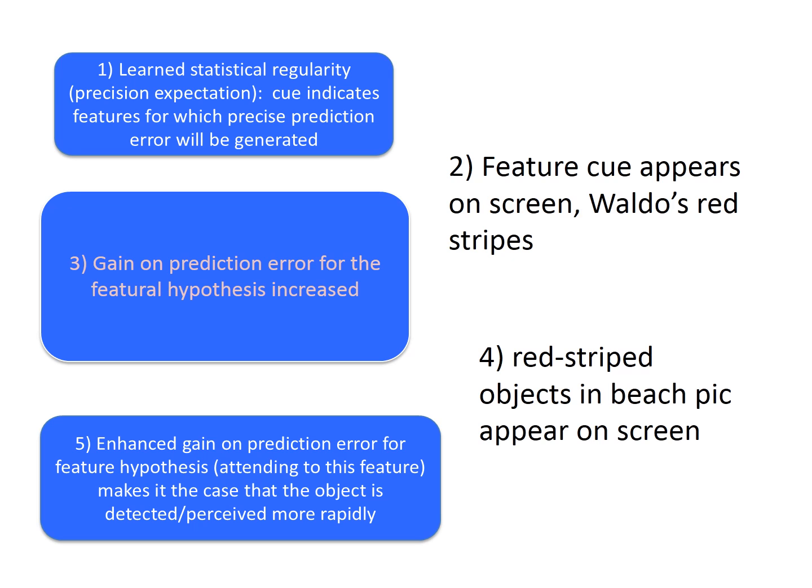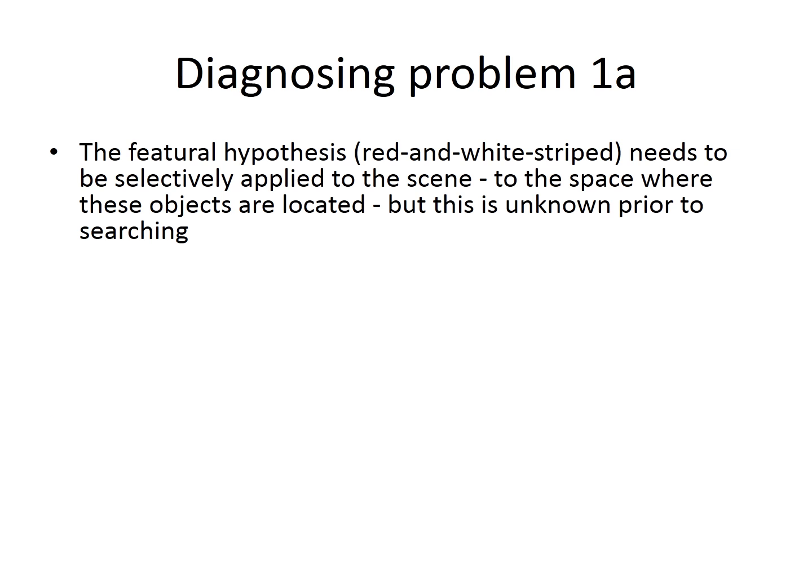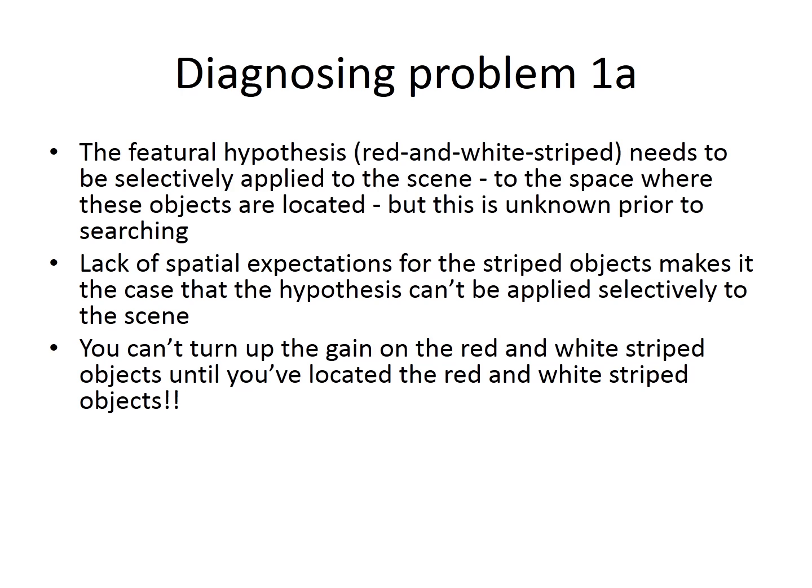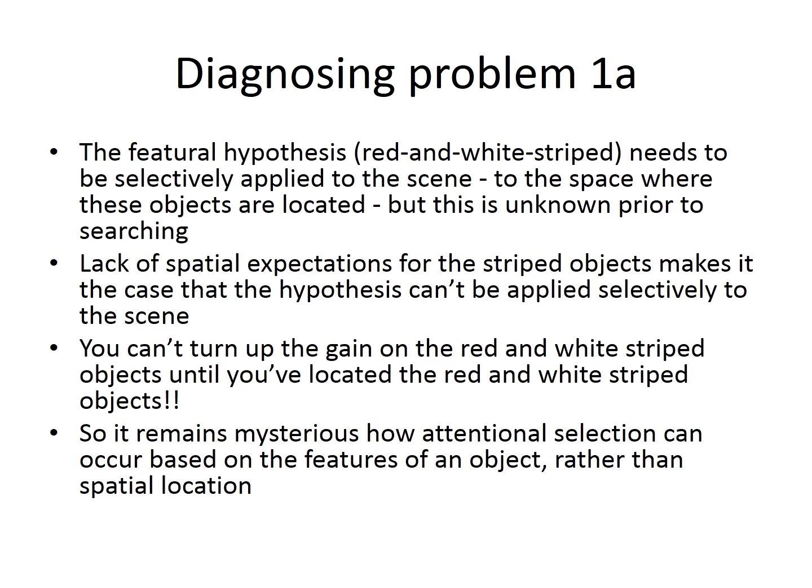Our criticism stems on the third point, that the gain on prediction error for the featural hypothesis is increased at this moment. There are two problems with three. The first is that, unlike spatial attention, where we could increase the gain on prediction errors for the spatial region, here, there's no actual perceptual hypothesis yet to generate prediction error. To diagnose the problem, the featural hypothesis needs to be selectively applied to the scene, to the space where these objects are located, or these features are located. But this is unknown prior to searching. Lack of spatial expectations for the striped objects or features makes it the case that the hypothesis can't be applied selectively to the scene. In other words, you can't turn up the gain on the red and white striped objects until you've located the red and white striped objects. So, it remains mysterious how attentional selection can occur based on the features of an object, rather than spatial location.